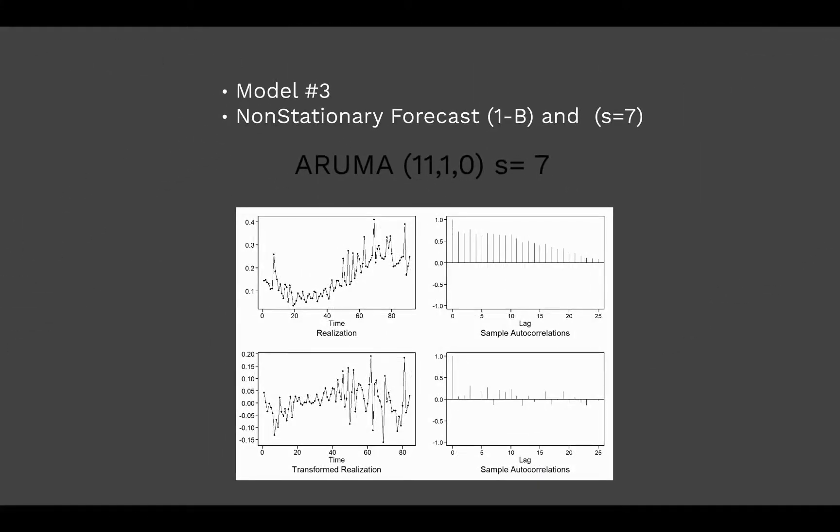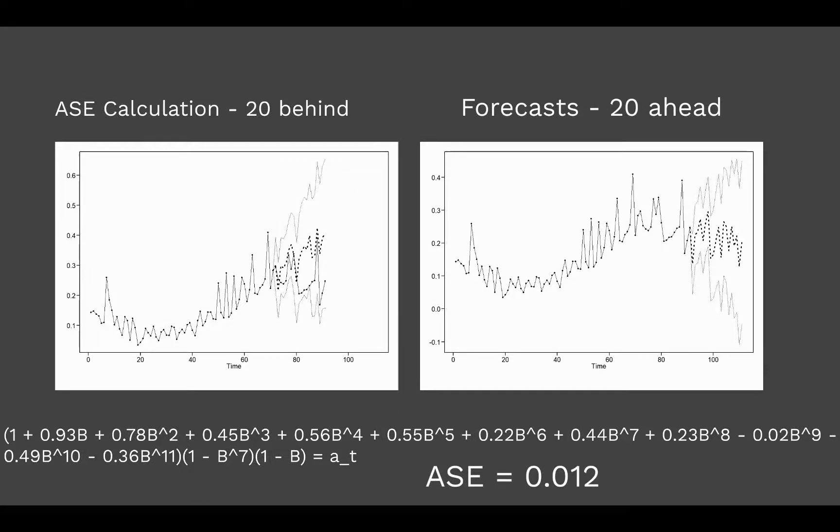And then thirdly we included an airline model which difference based off the trend as well as a 7-day seasonality. And here's our respective ASE calculation for the airline model as well as the formula that it outputted for us.